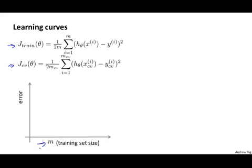M is usually a constant, like maybe I just have 100 training examples. But what I'm going to do is artificially reduce my training set size. So I'll deliberately limit myself to using only 10, 20, 30, or 40 training examples, and plot what the training error is and what the cross-validation error is for these smaller training set sizes. So let's see what these plots might look like.